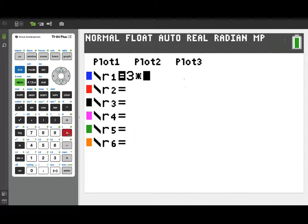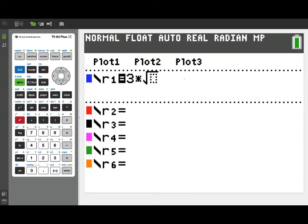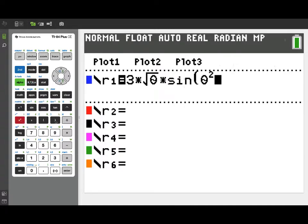Our r1 will put in the polar function that was given to us in this problem. That function was 3 times the square root of theta times the sine of theta squared. So I'm entering that as my polar function.